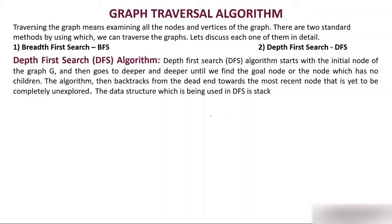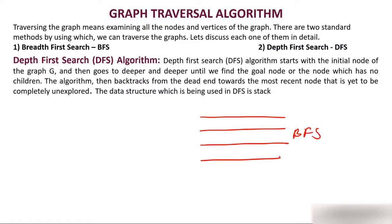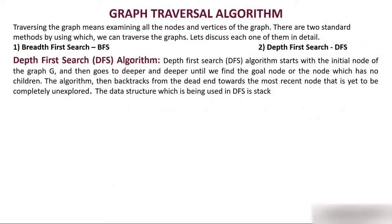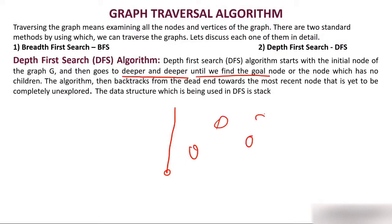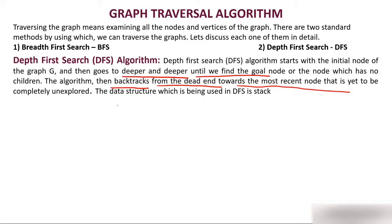What is Depth First Search? In a graph, if you travel breadth first, that becomes BFS, but if in a graph you go deeper first, then that traversal becomes DFS — Depth First Search. The algorithm starts from the initial node and goes deeper and deeper until we find the last node. If we find the last node we stop, then backtrack, because there are still more nodes to cover. You go deeper and deeper until you find a node with no children. The algorithm then backtracks from the dead end towards the most recent node.